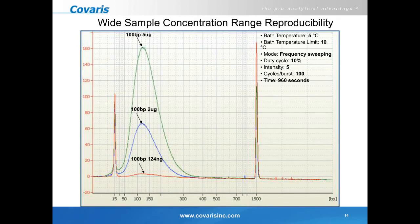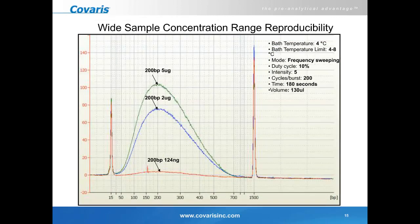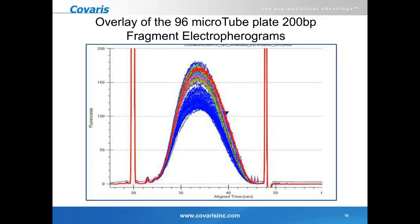The technology is concentration-independent — you can shear DNA across a wide range of concentrations using a certain setting and still get the same results. In this experiment, DNA sheared at 5 micrograms, 2 micrograms, and 124 nanograms to 200 base pairs shows no effect on distribution or average fragment size. Looking at a 96-sample overlay of 200 base pair fragments, there are no dropouts, no outliers — it is highly reproducible and always generates the same fragment distribution.